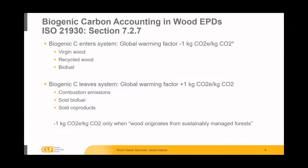According to ISO 21930, particularly Section 7.2.7, there are two characterizations for biogenic carbon — as it enters the product system and as it leaves the product system. The characterization factors are what you multiply by the physical flow of the emission or the removal to get the global warming potential. For all biogenic carbon entering the system, those are multiplied by a factor of minus one. That accounts for all virgin wood, recycled wood, and biofuels that originate from a sustainably managed forest.